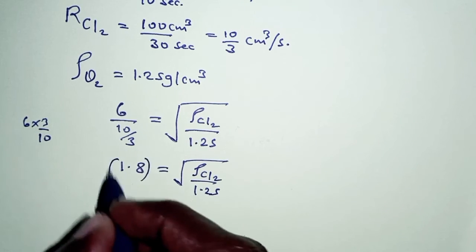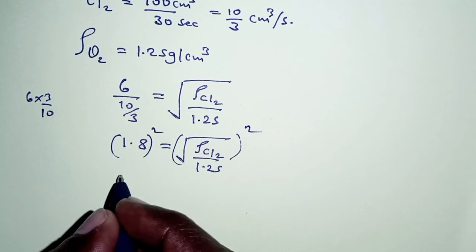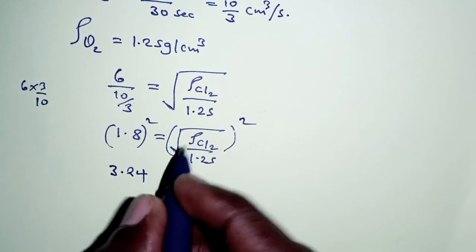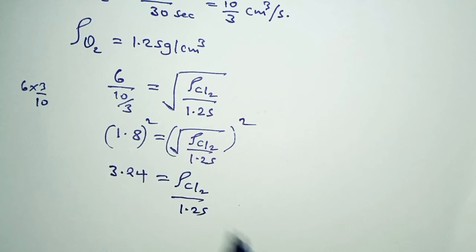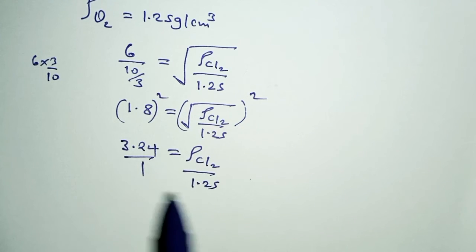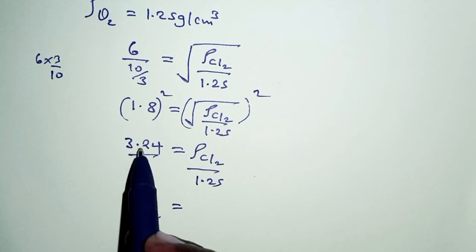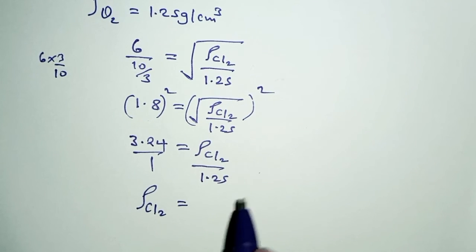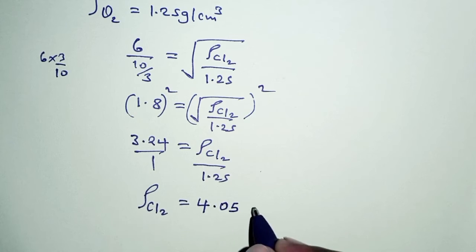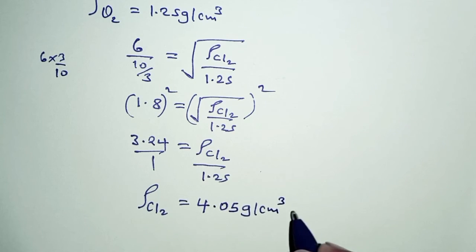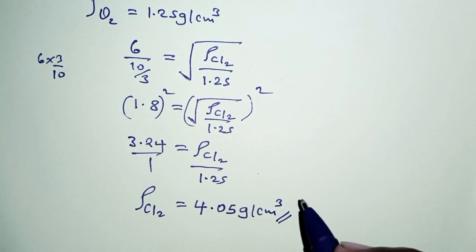We can square both the left-hand side and the right-hand side. Squaring the left-hand side: 1.8 squared is 3.24. On the right-hand side, we have the density of chlorine gas over 1.25. Cross-multiplying gives the density of chlorine gas as 3.24 times 1.25, which from the calculator gives us 4.05 grams per cubic centimeter. This is the density of chlorine gas as required.